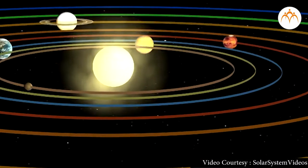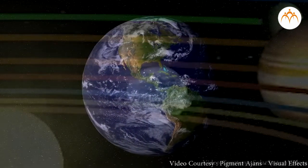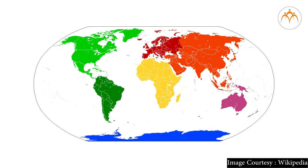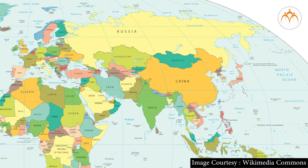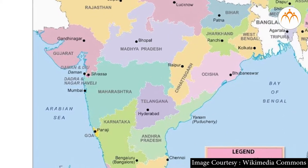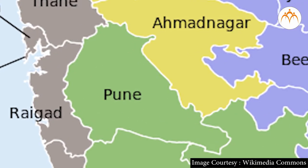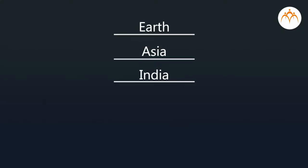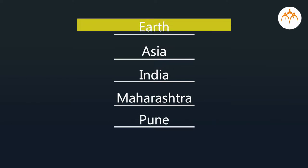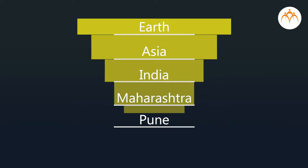Let's see a hierarchy example. Earth is a planet in the solar system. Land masses on earth are divided into continents. India is one country out of many from the continent Asia. Maharashtra is one of many states in India, and Pune is one city from Maharashtra state. In this hierarchy, earth is the first and biggest level, and all next levels are part of the previous level.